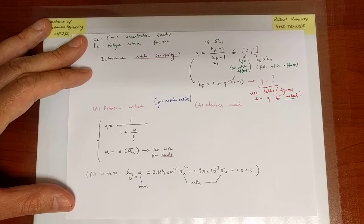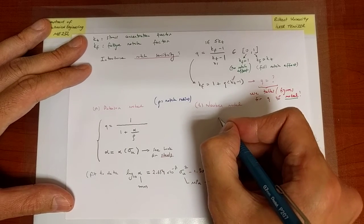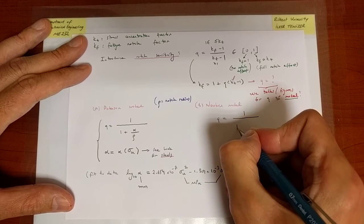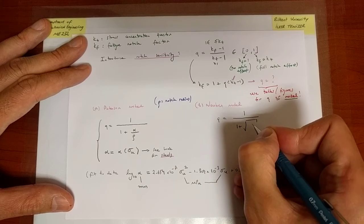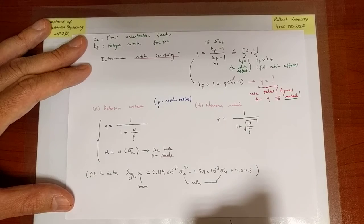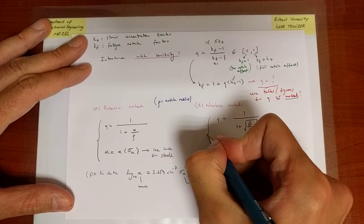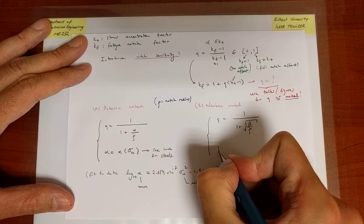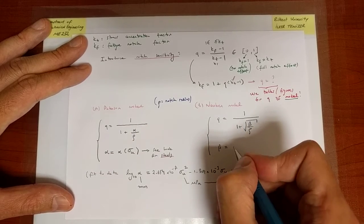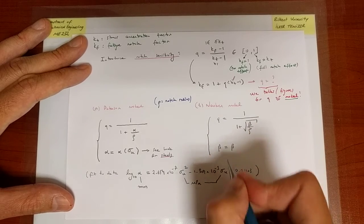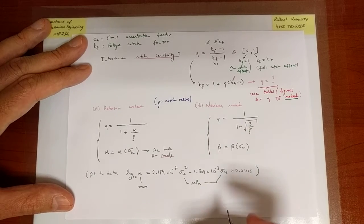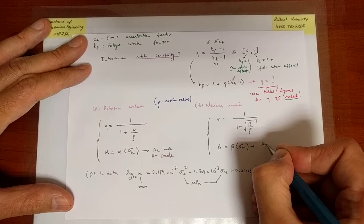But that's not the only model. There is also a Neuber model. It looks similar the way it's structured. There is a 1 over 1 plus term, but then the rest is slightly different. There's a square root and a new constant, beta over rho. And here, just like for the Neuber model, beta is a function of the ultimate strength. You should see your book. In this case, there are two cases, steels and aluminum.